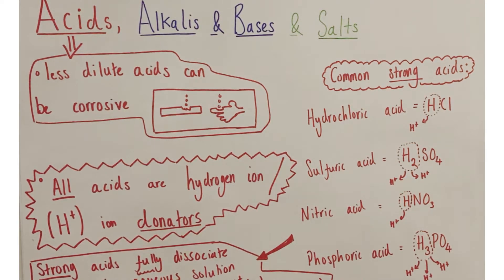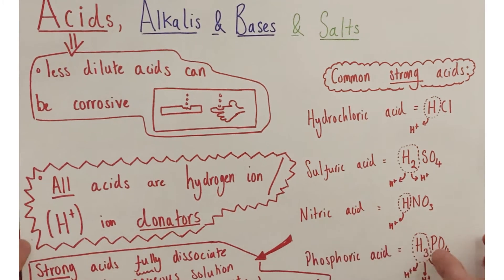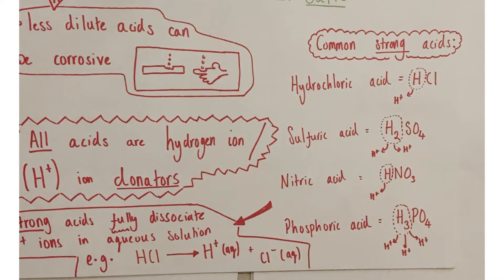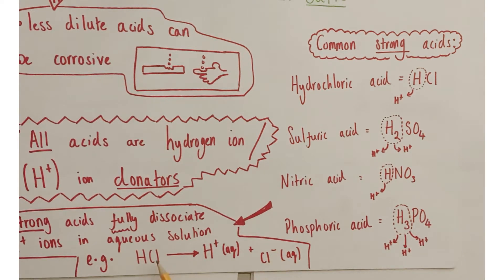A strong acid is defined as an acid which will fully dissociate all its hydrogen ions in aqueous solution — that means every molecule of that acid in water will release the hydrogen ions it possesses. A nice example is mineral acids like hydrochloric acid. Every single HCl molecule dissociates, releasing its hydrogen ion and also the chloride ion separately, breaking down from HCl into separate H+ ions and Cl- ions.